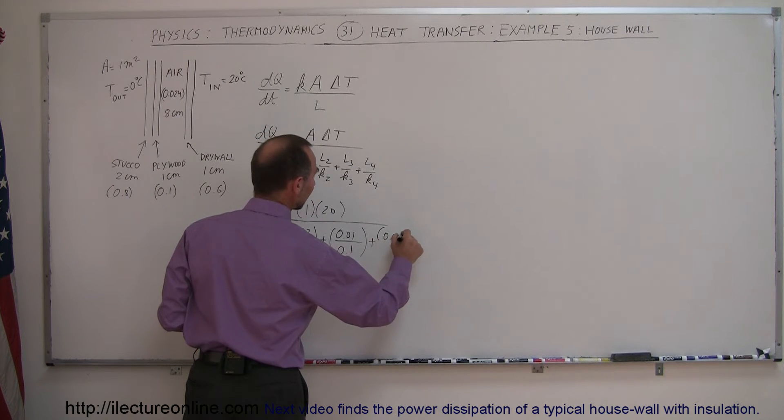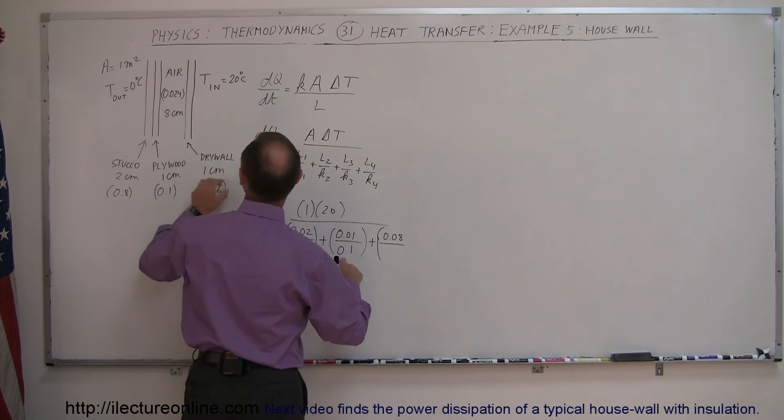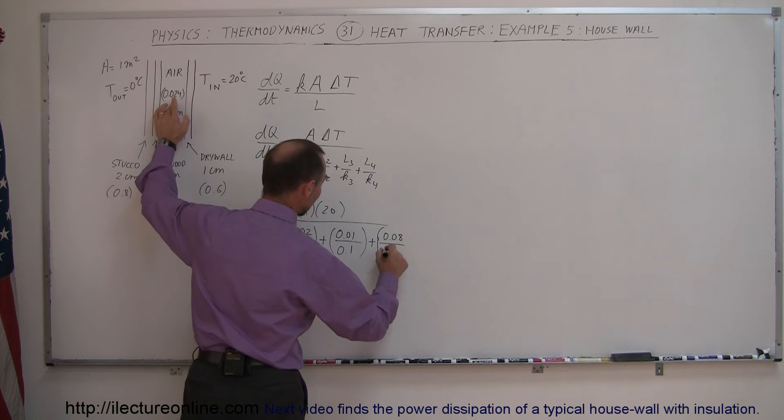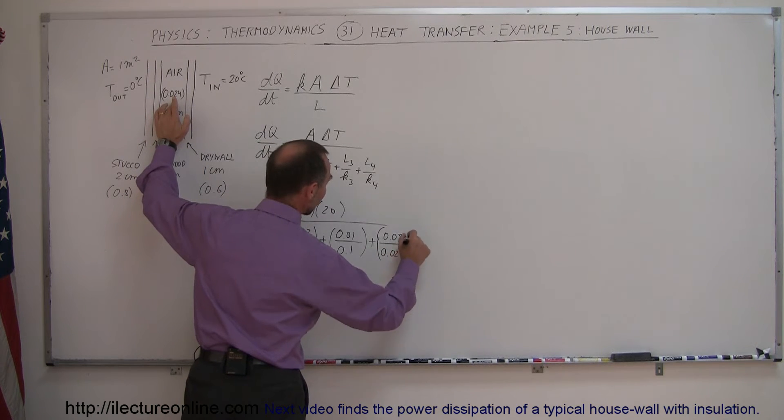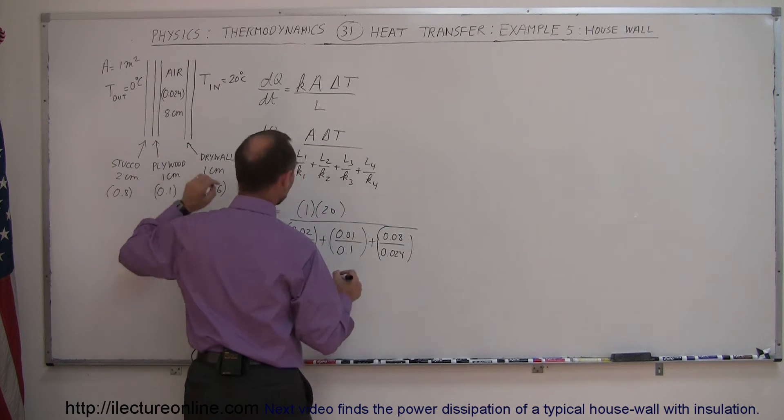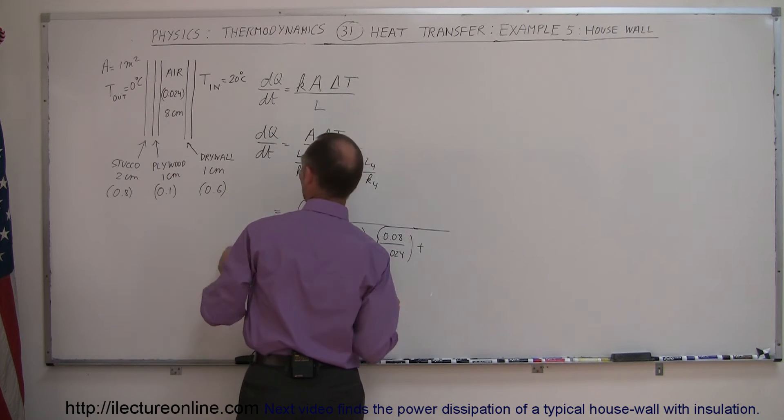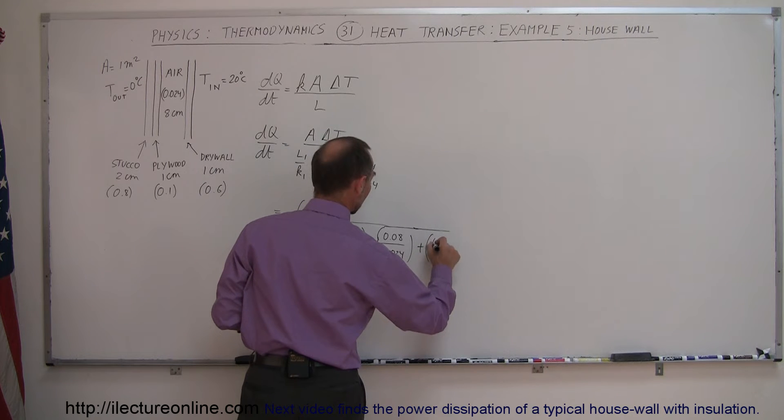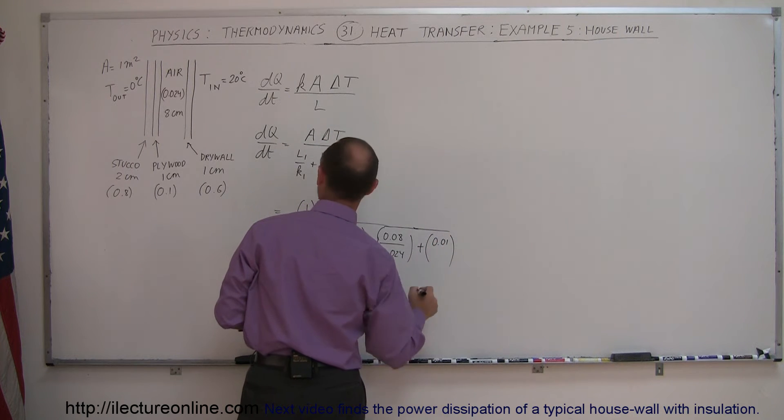0.08 divided by the K for air, which is of course small, 0.024 like that, and then finally the last layer would be the drywall on the inside, that would be 0.01, about one centimeter thick.